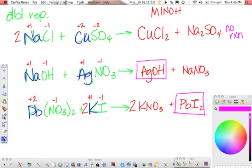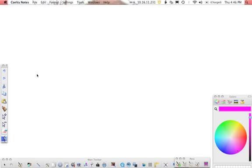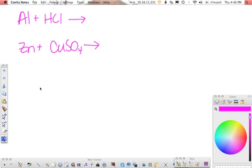Now, moving on to the single replacement reactions, we'll do one from each section. Let's do Al plus HCl, we can do zinc plus copper sulfate, let's do lead with zinc nitrate, and how about copper with lead nitrate?